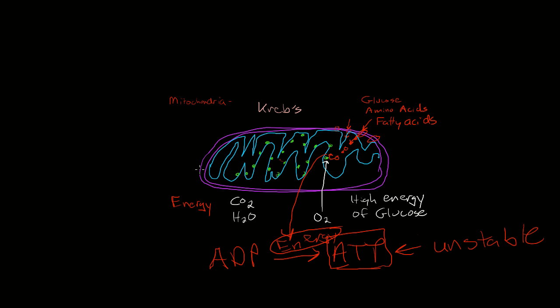They generate energy by breaking down high-energy bonds in glucose, fatty acids, and amino acids, then using that energy to create a new high-energy bond by bonding a phosphate to adenosine diphosphate and turning it into adenosine triphosphate.